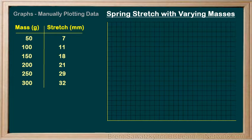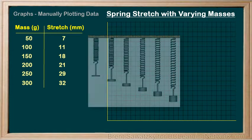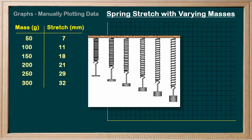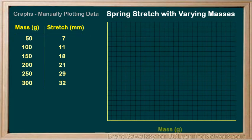Before we do the axis titles, let's ensure we know which is the independent and which is the dependent variable. We physically attach the masses 50 grams at a time, so we're controlling the mass — mass must be our independent variable, belonging on the x-axis. We measure the resulting stretch each time, so the stretch measurement must be our dependent variable, belonging on the y-axis.